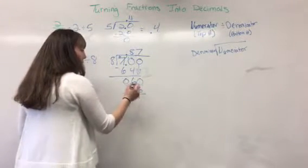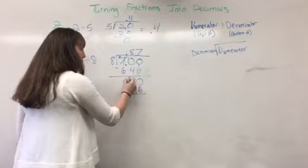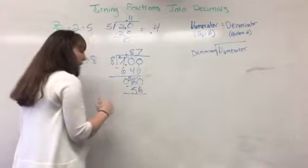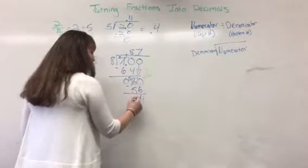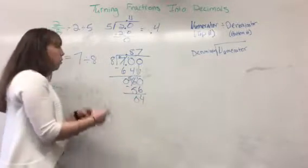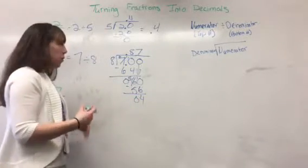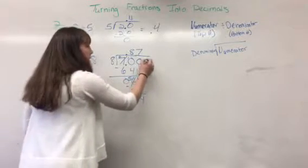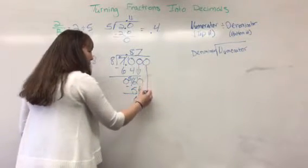0 can't be minus by 6, so we'll cross this out, make it a 5. We'll make this 0 a 10. So 10 minus 6 is 4. 5 minus 5 is 0. We're not at 0 yet, so we'll keep going. So we'll annex a third 0. Bring it down.